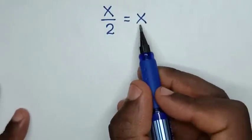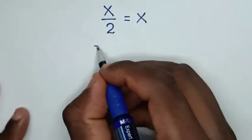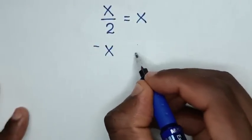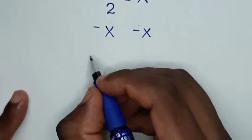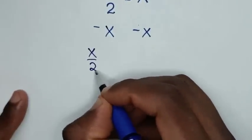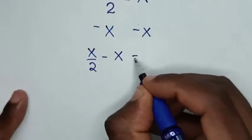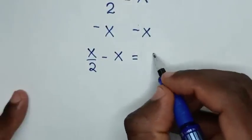First, we will subtract x from both sides. Then our equation becomes x over 2 minus x equals x minus x, which is 0.